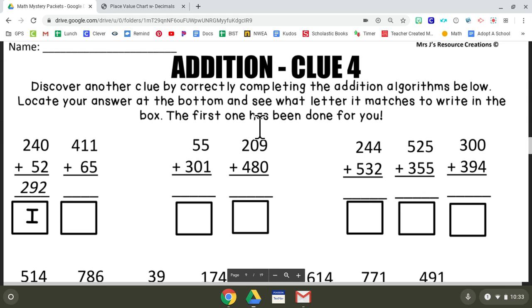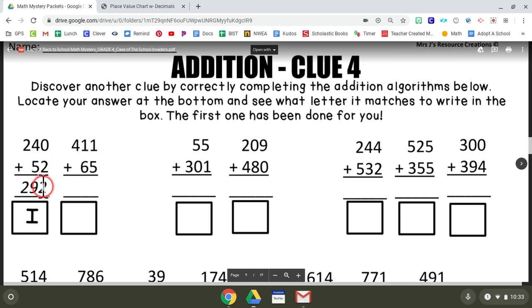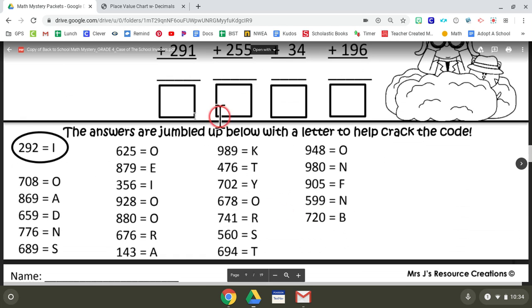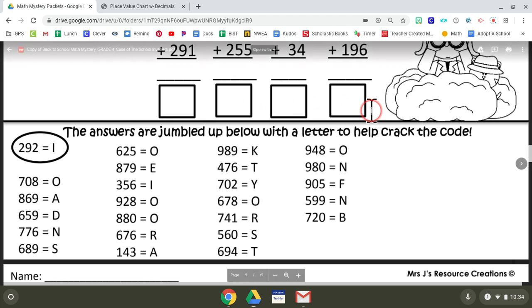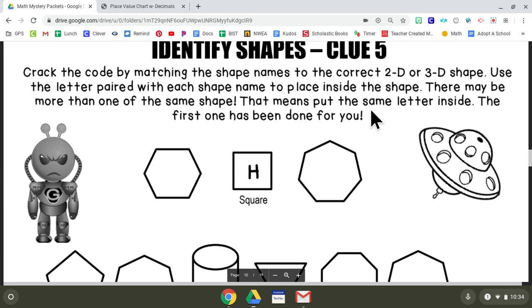Thursday, Addition. Discover another clue by correctly completing the addition algorithms below. You all know how to add. Be very, very careful that you are carrying the correct numbers to the correct place values. In this case, zero plus two is two, four plus five is nine, and two—two hundred ninety-two. One plus five is six, one six is seven, bring the four down. Then you're going to go down to the bottom. Here's all the possible answers and it gives you the letters for that, and then you're going to place them in the boxes here at the bottom to find your next clue.